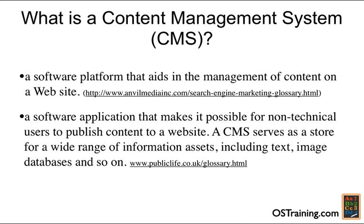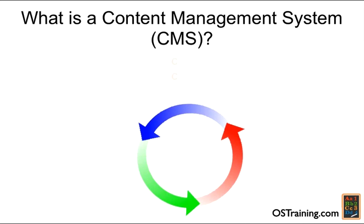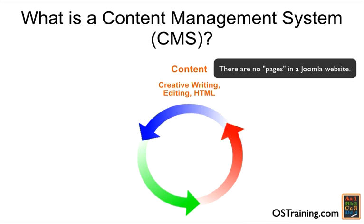Let's take a look at what a content management system looks like. A CMS splits all of your website into basically three different aspects or areas. First is content — it's what you put into your site: the creative writing, the editing, maybe some HTML, PHP, CSS, whatever goes into your content items. Those are all stored in a database. You have to think of it like three almost separate entities, instead of the old way of writing HTML where each page was contained in a single file. There are no pages in a Joomla website — there are content items stored in a database.